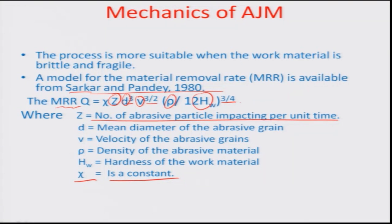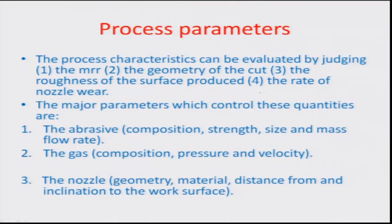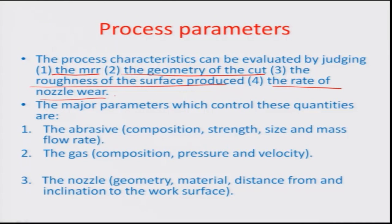This is an empirical formula that comes from regression analysis done on the actual process. In the USM process, we will do a geometrical derivation that may result in a similar kind of MRR formulation. The process characteristics can be evaluated by the material removal rate, the geometry of the cut, the roughness of the surface produced, and the rate of nozzle wear — these are the four main characteristics of any abrasive jet machining process.